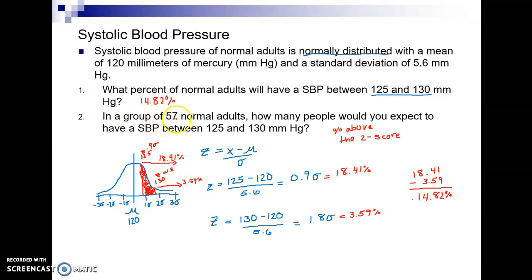So we have a second question here. It says in a group of 57 normal adults how many people would you expect to be in this range? Well I would expect 14.82 percent of the 57 adults to be in this range. So what I really have is a percent problem and I have to think back to what do I know about solving a percent problem.